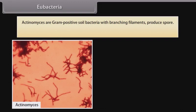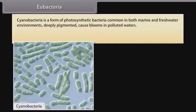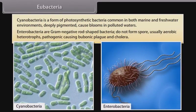Actinomyces are gram-positive soil bacteria with branching filaments that produce spores. Chemo-autotrophs are bacteria able to obtain their energy from inorganic chemicals. Cyanobacteria is a form of photosynthetic bacteria, common in both marine and freshwater environments, deeply pigmented, and causes blooms in polluted waters. Enterobacteria are gram-negative rod-shaped bacteria that do not form spores, are usually aerobic heterotrophs, and are pathogenic, causing bubonic plague and cholera.